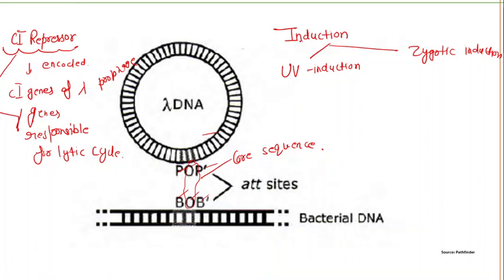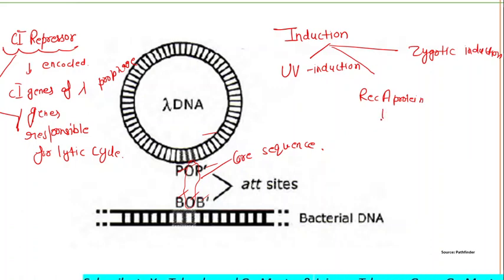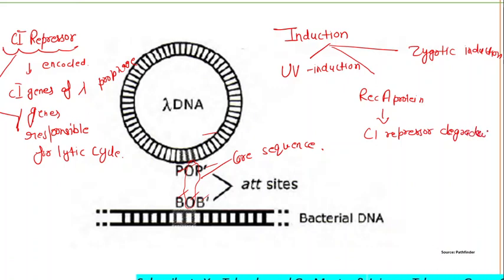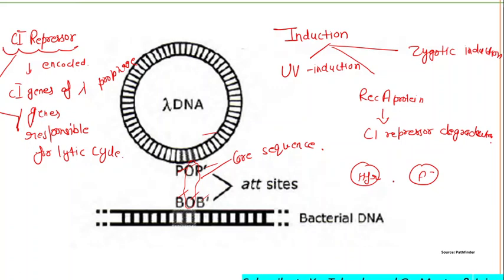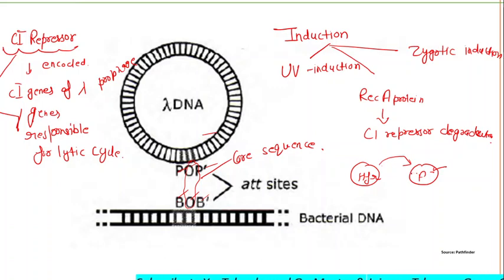Lysogeny can be induced by UV radiation — this is UV induction. DNA damage causes the RecA protein, a recombination protein acting as a co-protease, to stimulate degradation of the CI repressor, so repression no longer occurs. If a cell with HFR (high frequency recombination) mates with an HFr-negative cell, it is like infecting a non-lysogen with lambda. When the lambda prophage enters the non-lysogenic recipient, which contains no lambda repressor, transcription of the prophage begins, the recipient lyses, and this is called zygotic induction.